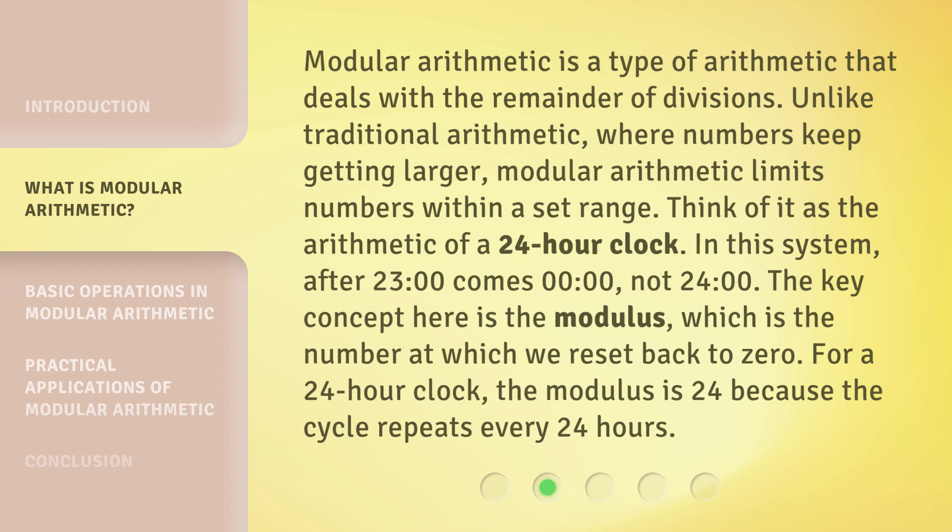modular arithmetic limits numbers within a set range. Think of it as the arithmetic of a 24-hour clock. In this system, after 2300 comes 0100, not 2400.